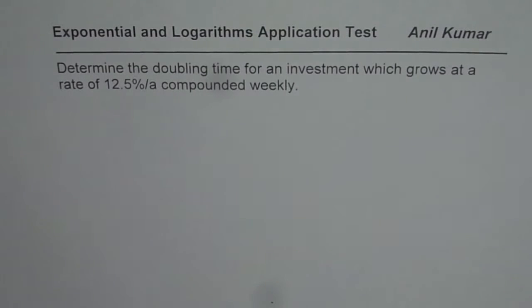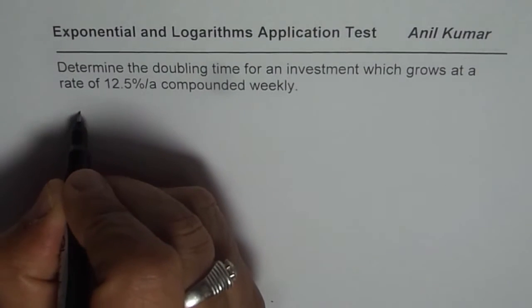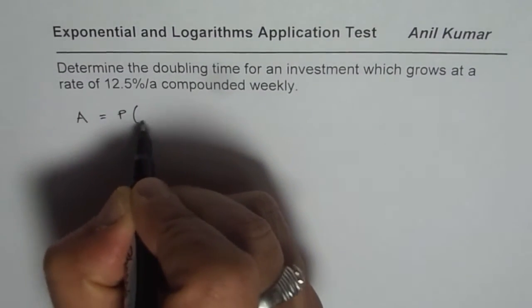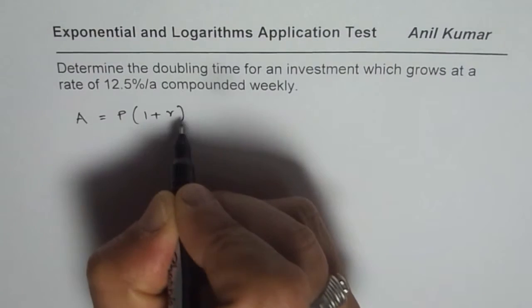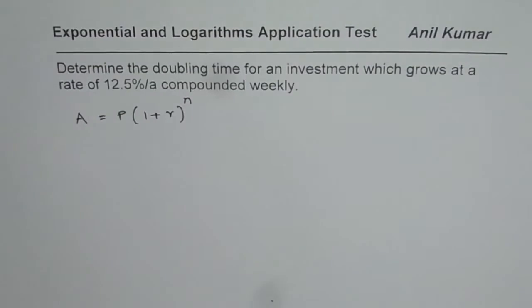You can pause the video, answer the question and then look into my suggestion. The formula for you is amount equals the principal amount times 1 plus rate of interest to the power of n, where n is the number of compoundings which are done.